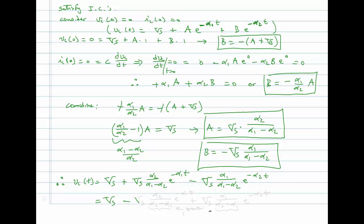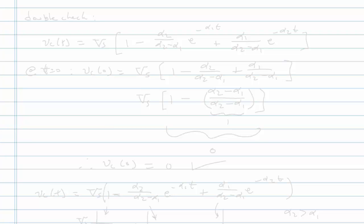Rewriting to show the signs explicitly: VC(t) equals minus VS·alpha_2 over (alpha_2 minus alpha_1)·e^(−α1·t) plus VS·alpha_1 over (alpha_2 minus alpha_1)·e^(−α2·t). Both terms are individually greater than zero, but because alpha_2 is greater than alpha_1, the first term dominates, so the overall combination of those two is actually negative. We can rewrite this as: VC(t) equals VS times [1 minus alpha_2 over (alpha_2 minus alpha_1)·e^(−α1·t) plus alpha_1 over (alpha_2 minus alpha_1)·e^(−α2·t)].